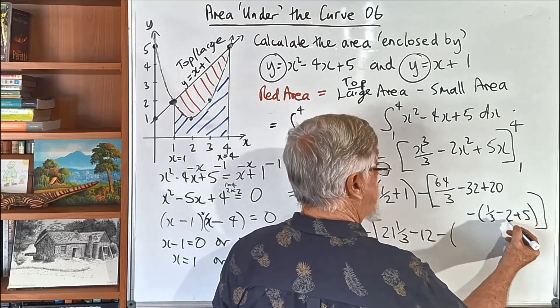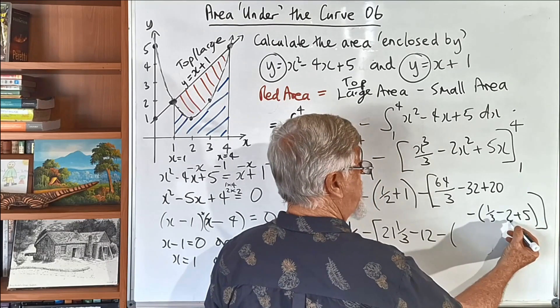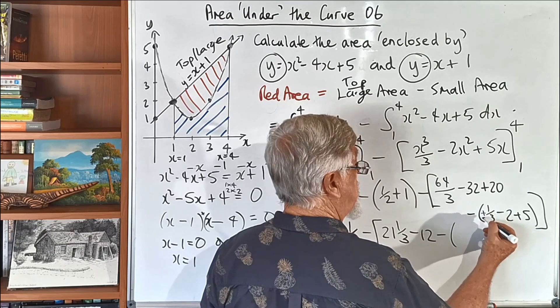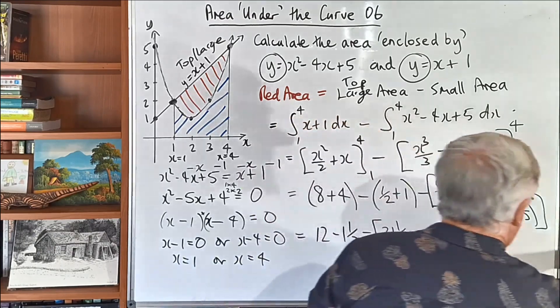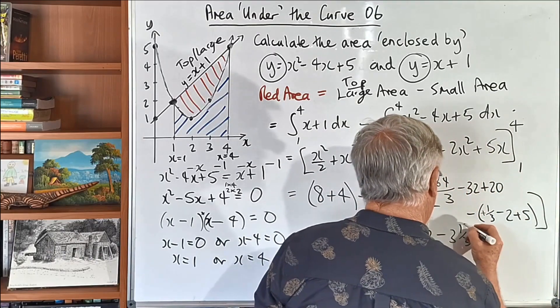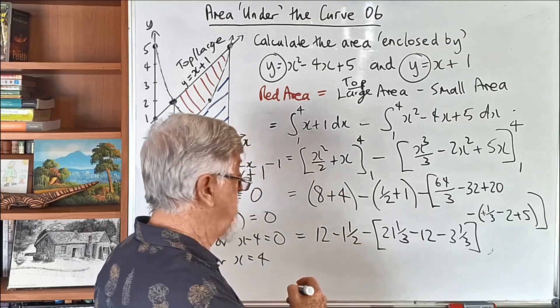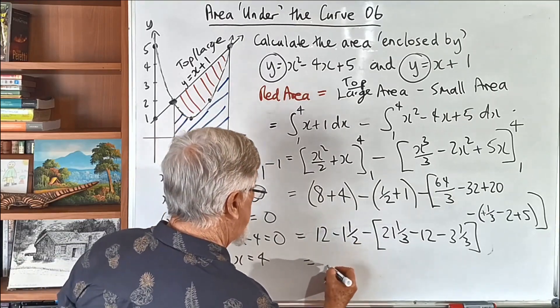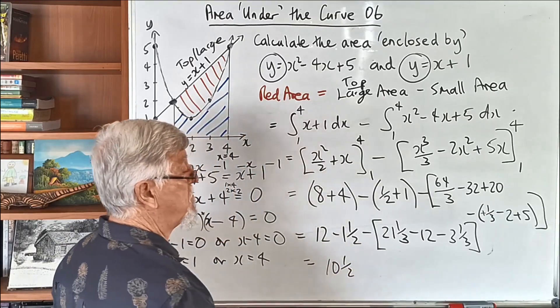Here, 5 take 2 is 3 plus a third. Now, that's just 3 and a third, so we don't need that bracket there. 3 and a third. Now, we need that square bracket around all of those. On the left, where you're 12 take that, it's 10 and a half. Let's go through this carefully.